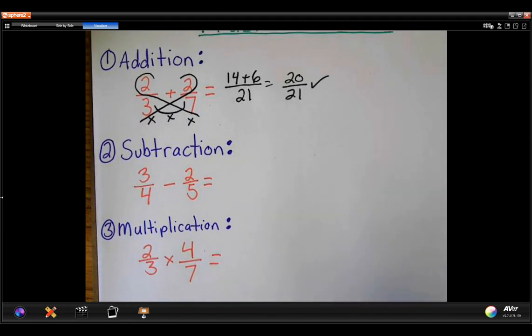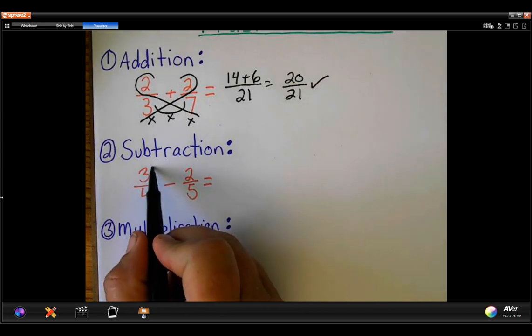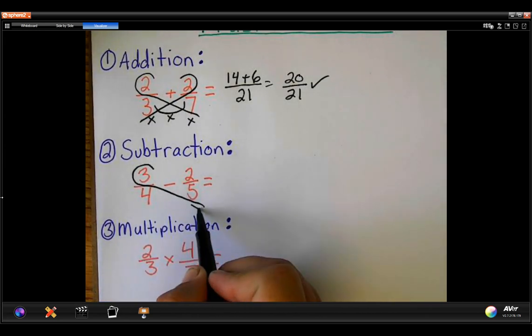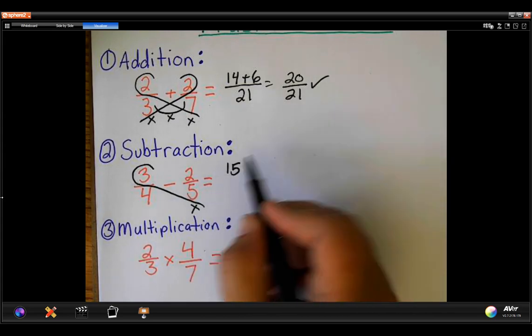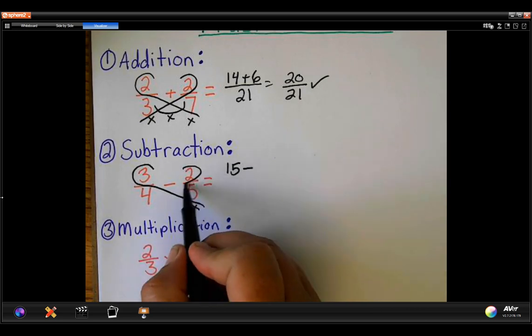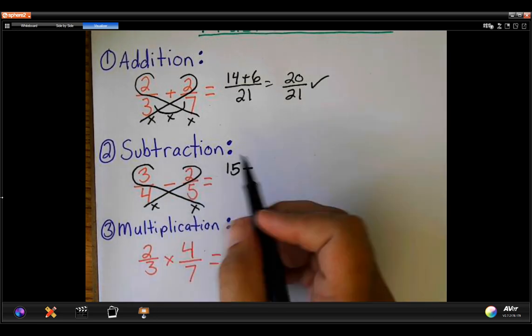Subtraction. We're going to start the same way. Start on my left side. 3 times 5 is 15. I'm going to minus it because that's what we're doing here. 2 times 4 is 8.